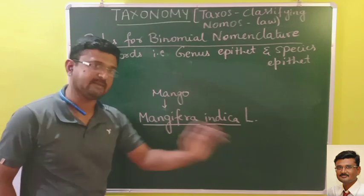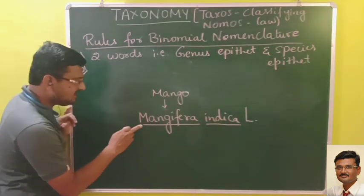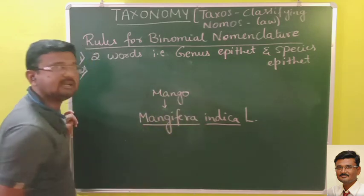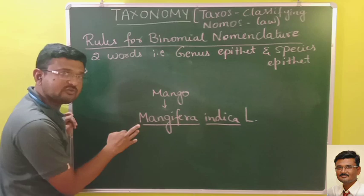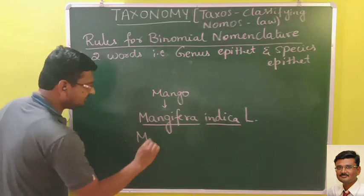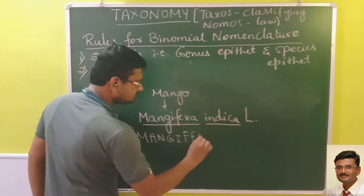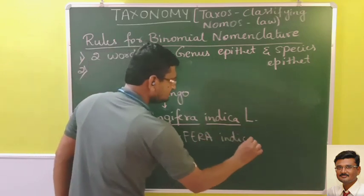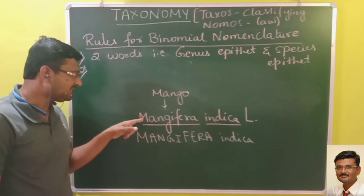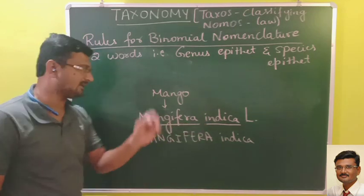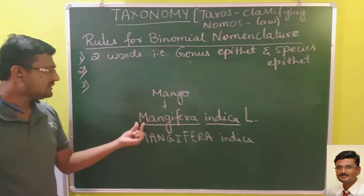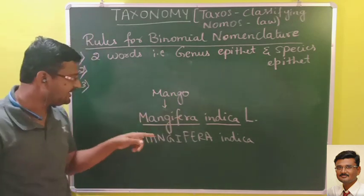The first word is always the genus name and the second is the species name. The second rule says the genus name should always start with a capital letter and the species name should start with a small letter. Many people mistakenly write the genus name entirely in capitals — that is wrong. The genus name should only start with a capital letter, and the species name should start with a small letter.